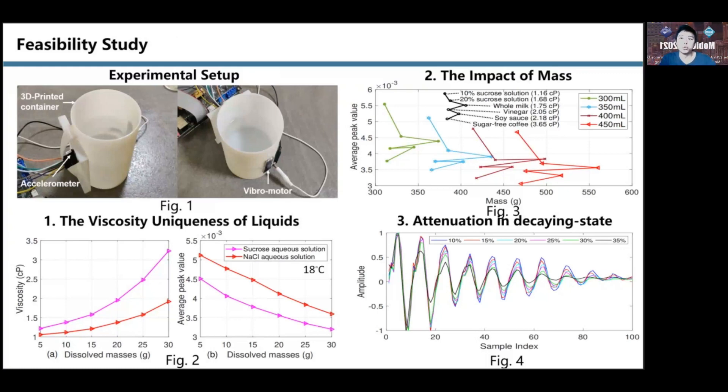But what is the source of these differences? We need to determine whether the vibration signal is due to change of momentum caused by increase in mass, or the effect from shearing force caused by viscosity. Therefore, we need to find liquids with the same mass but different viscosity.